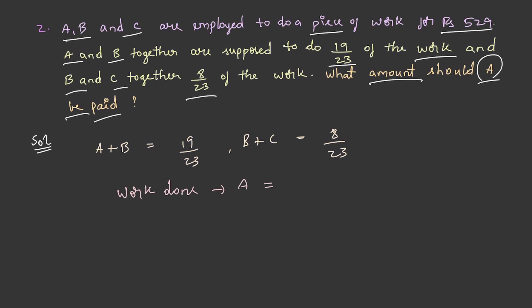That is by subtracting B plus C from the total value, that is 1. Therefore, 1 minus 8 by 23 becomes 15 by 23. So work done by A is 15 by 23. Here the total amount is given.